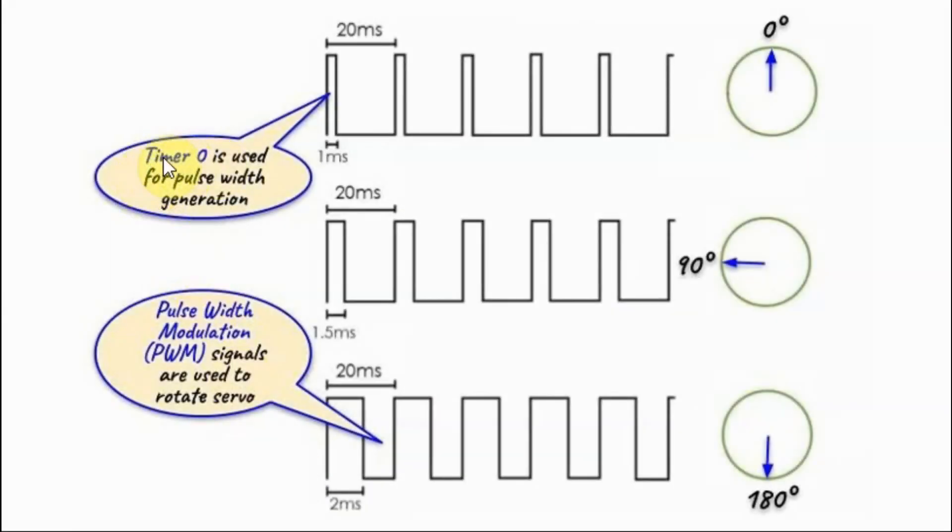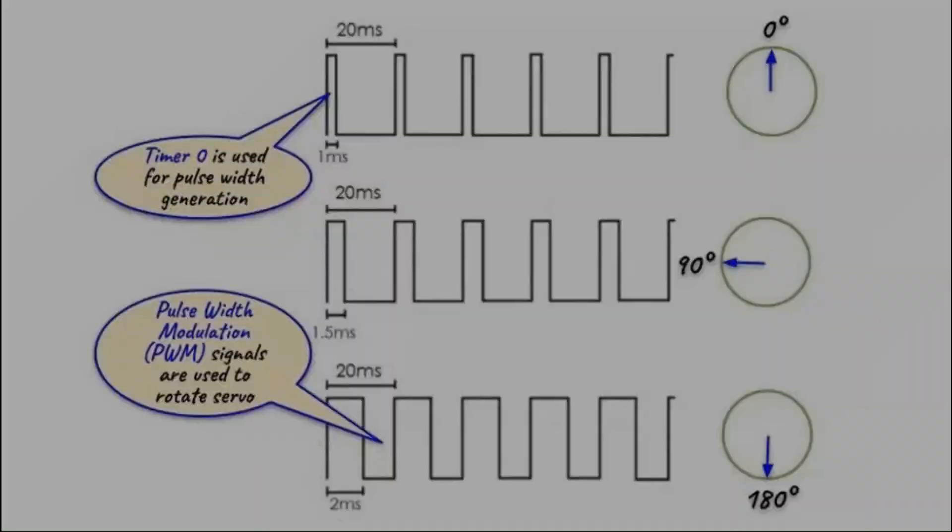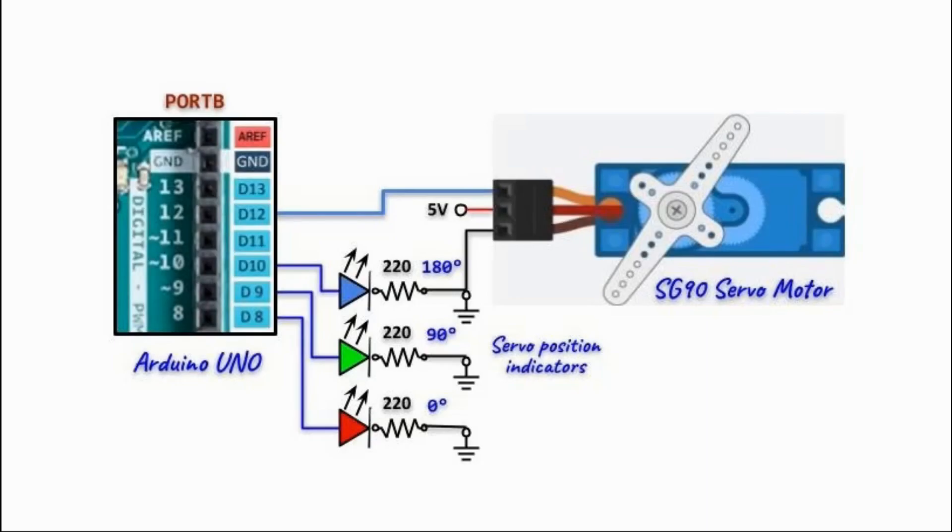In this video, timer 0 will be used to give the different pulse widths. A circuit diagram of the implemented system is shown here. We have the SG90 interface with the Arduino through pin PB4 of port B, and we have three LEDs connected to PB0, 1 and 2. The red LED indicates the servo position at 0 degrees, the green at 90 degrees, and the blue at 180 degrees.